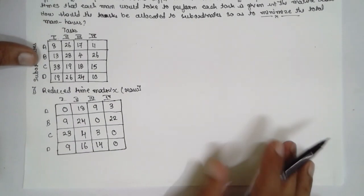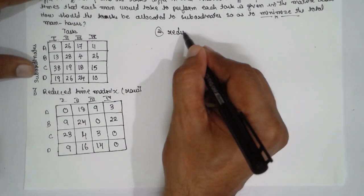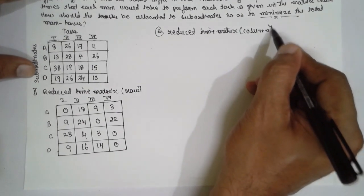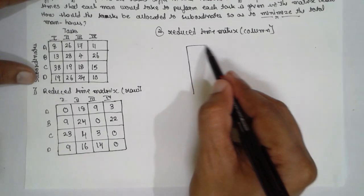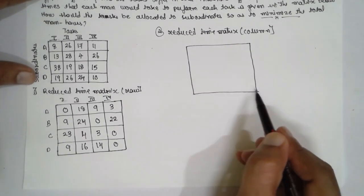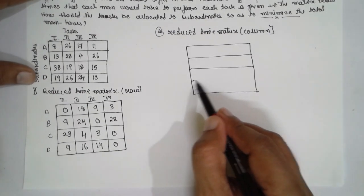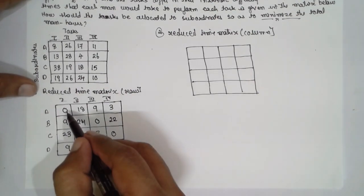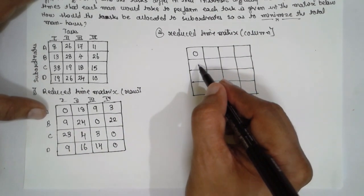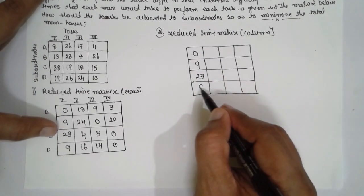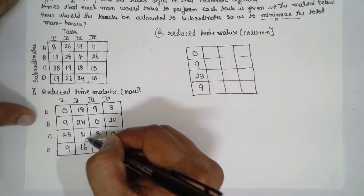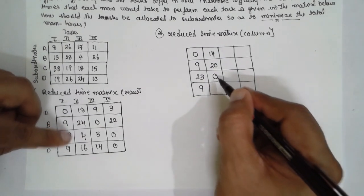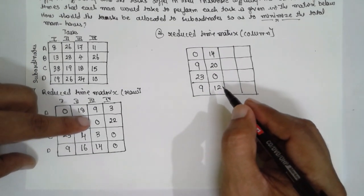Step 2: Reduce the time matrix column-wise. Select the minimum value in each column and deduct it from all elements in that column. For the first column, the minimum value is 0, so: 0 minus 0 = 0; 9 minus 0 = 9; 23 minus 0 = 23; 9 stays. For the second column, the smallest value is 4: 18 minus 4 = 14; 24 minus 4 = 20; 4 minus 4 = 0; 16 minus 4 = 12.